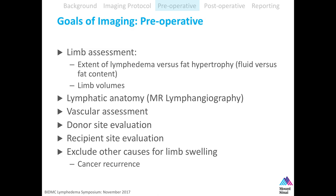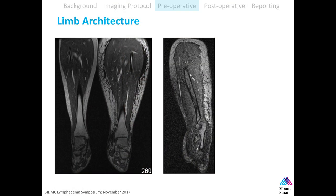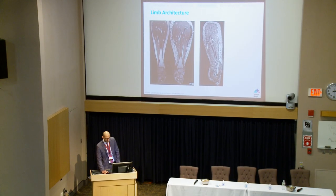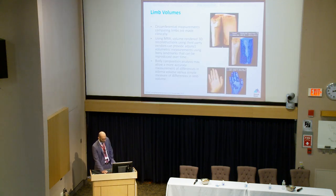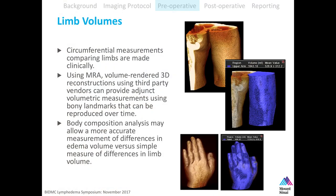The worst call I have to make is calling my surgeons to tell them I see something worrisome as a cause for limb swelling. Looking at limb architecture, here's a lower extremity where the unaffected side has normal fat signal on T1-weighted, fluid-dark, fat-bright images. In the affected extremity, you can see almost a river of fluid laterally. Here's an upper extremity with the same imaging approach. These are very thin isotropic voxels that you can upload to a third-party software program to automatically calculate volumes.